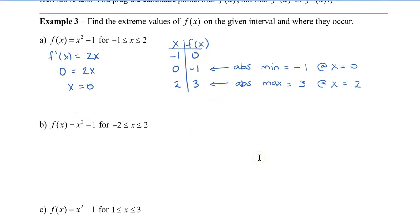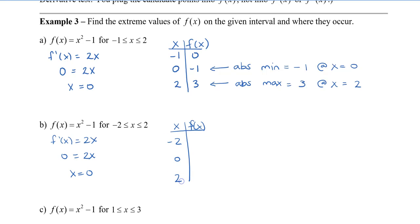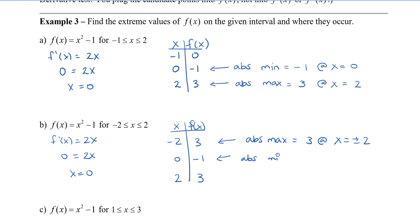For f of x equal to x squared minus 1 — this is the same function, same derivative — setting f prime equal to 0 gives x equal to 0. But we have a different interval. This time I have endpoints negative 2 and 2, plus critical point 0. Plugging these in, I get f(−2) = 3, f(0) = −1, and f(2) = 3. I can see that there are two maxes, both equal to 3. So the absolute max equals 3 and it occurs at x equal to plus or minus 2. The absolute min equals negative 1 and that occurs at x equal to 0.